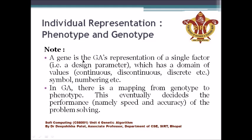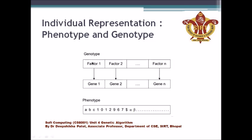A gene is the GA's representation of a single factor. The gene is representing a single factor. For example, factor 1 maps to gene 1, factor 2 maps to gene 2, and so on — we are representing a single factor from a single gene.